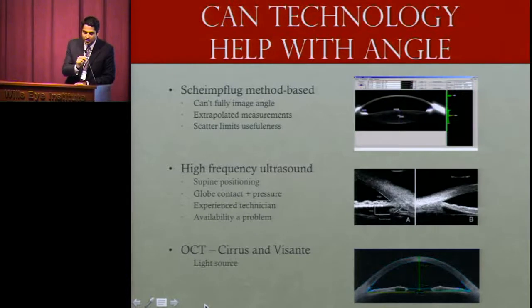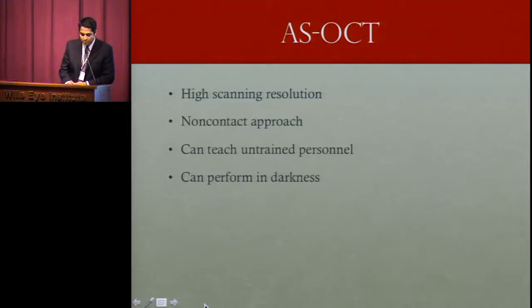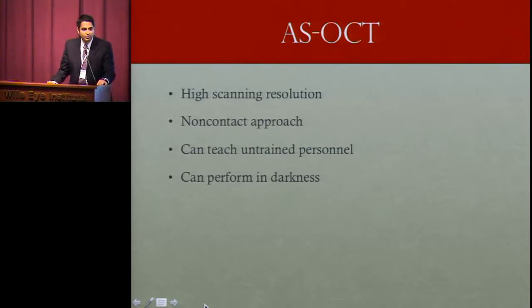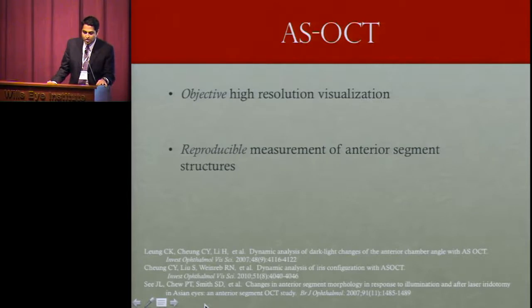Can technology help? Can we use technology to facilitate screening large populations to identify who's most at risk from angle closure? There are several methods for imaging the angle: the Scheimpflug method, high-frequency ultrasound UBM, and OCT. We chose to focus on OCT, which uses a light source. The advantages of OCT include high scanning resolution, non-contact imaging, the ability to train untrained personnel, and it can be performed in total darkness.